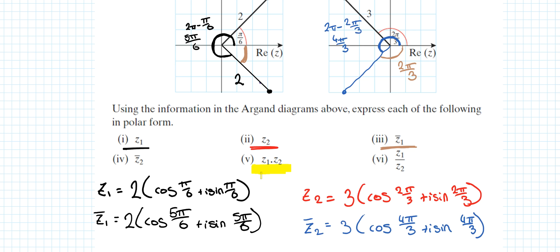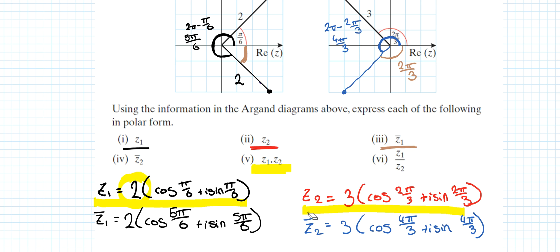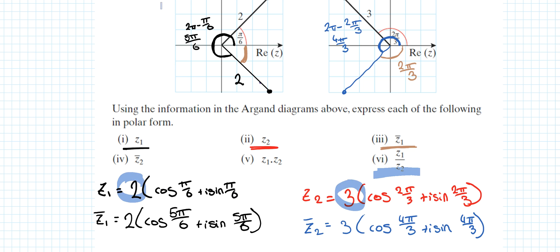To find z₁ × z₂, recall that when multiplying in polar form you multiply the moduli and add the arguments. For division in polar form, you divide the moduli and subtract the arguments — so z₁ ÷ z₂ gives 2/3, with argument π/6 − 2π/3.